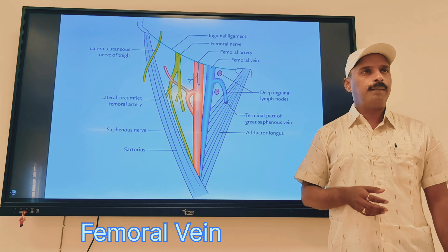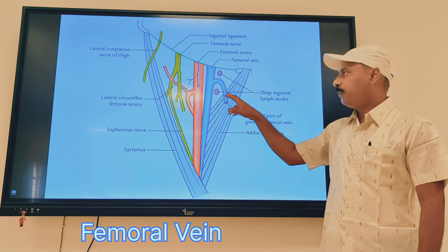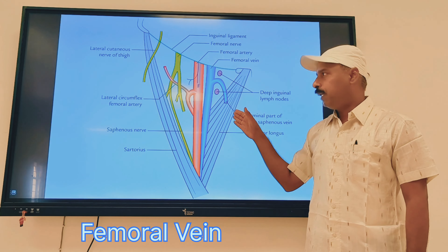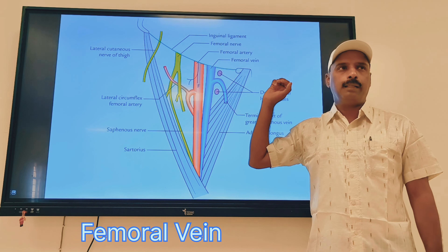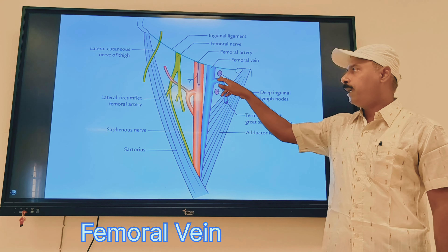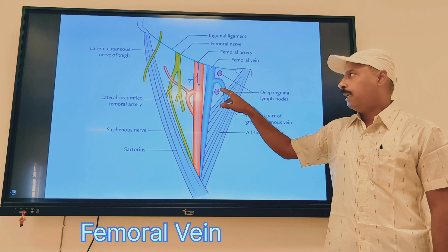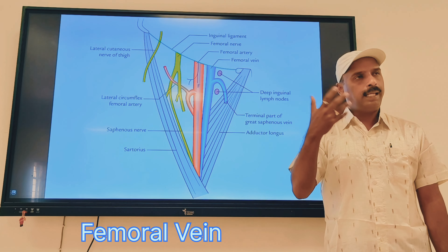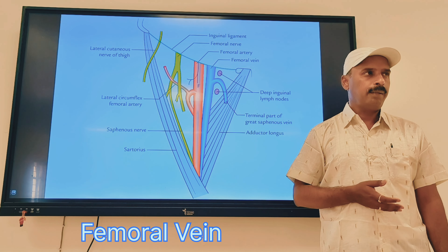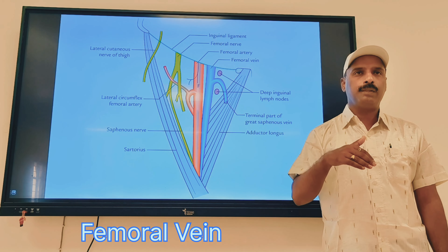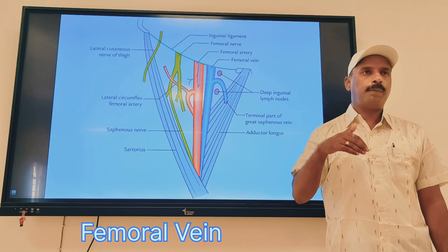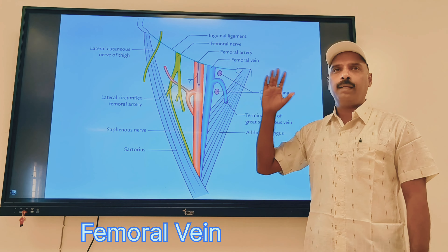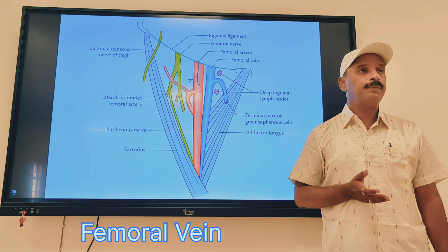What are the tributaries received by the femoral vein? One tributary is the great saphenous vein, which opens into the femoral vein — that you have to remember. Others are the veins accompanying the deep branches of the femoral artery, whatever branches were given. The same veins as tributaries we are going to get. So those are the veins accompanying the deep branches of the femoral artery.